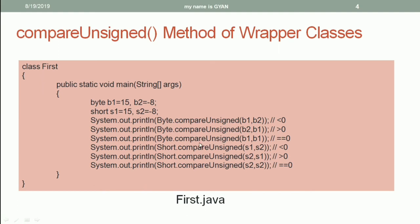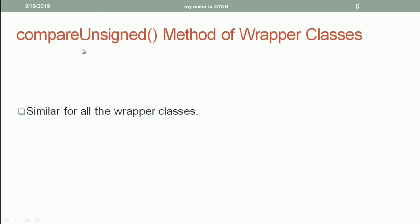When you call compareUnsigned method of the class Byte by using two arguments b1 and b1, then both have the same values and it returns 0. And same is the case with Short. The compareUnsigned method is similar for rest of all the wrapper classes, similar for Short, similar for Integer, similar for Long.